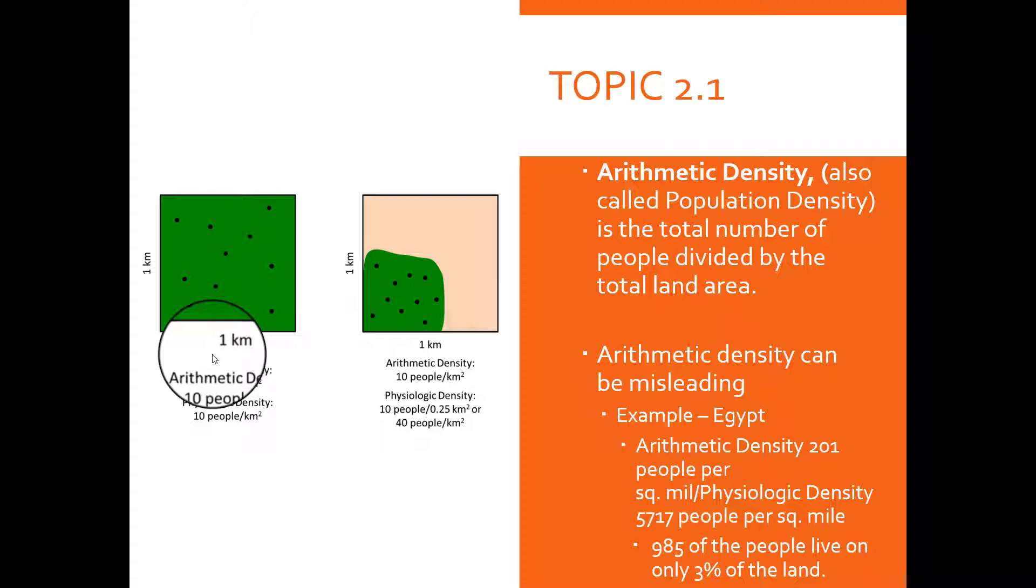Arithmetic density can be slightly misleading. For example, in Egypt, the arithmetic density is 201 people per square mile. However, the physiologic density is 5,717 per square mile, which means that 98.5% of the people of Egypt live on only 3% of the land. Why is it that only a certain amount of people are living on a small amount of space? Give me your thoughts in EdPuzzle or in the comments.